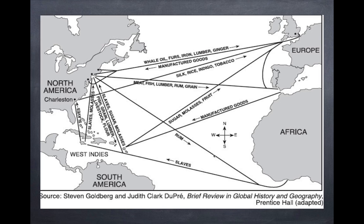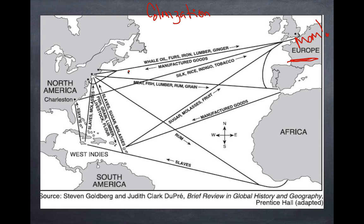Here's a picture of the slave trade. A big thing about this — and this is a big part of colonization — is that the mother countries, which are over here in Europe, they get all of the natural resources. Natural resources like whale oil, furs, iron, lumber, and ginger all get sent back to Europe, especially England. And in return, they send back manufactured goods. Africa joins into this by providing all of the slave labor to harvest all of these things. That's how this triangular trade route works.